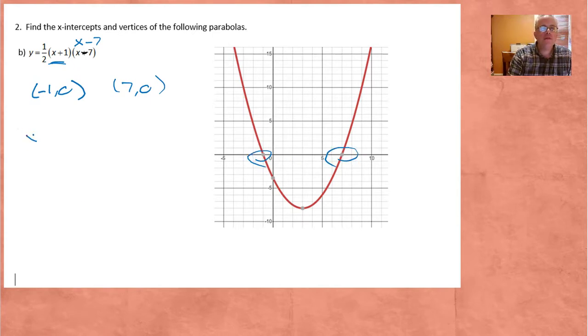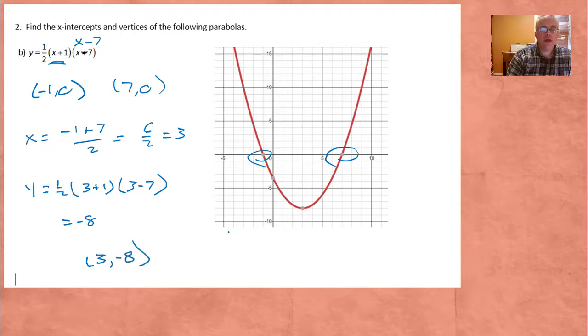To find the vertex, we're going to average them. The vertex is right in the middle. So that'd be 6 over 2, which is 3. That makes sense, 3 is in between those two points. And the y-coordinate is 1 half, 3 plus 1, times 3 minus 7, which gives us negative 8. So the vertex is 3 comma negative 8, which is right there.